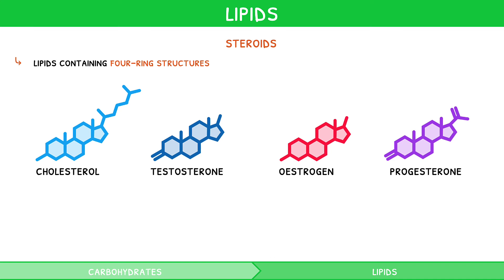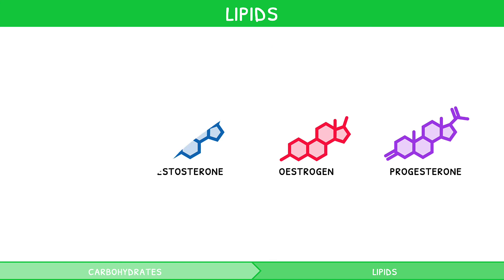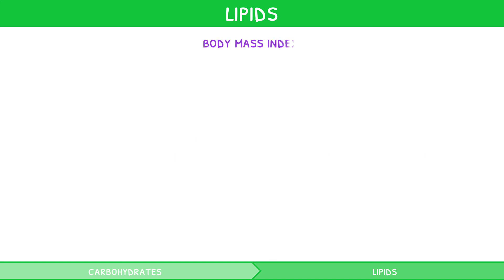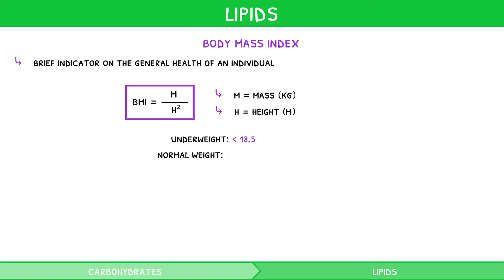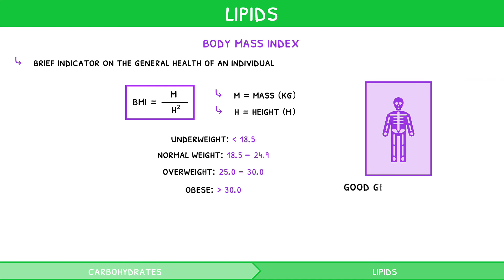Lipids and cholesterol are often discussed in relation to human health, with regards to the concept of body mass index. This measure is a brief indicator of the general health of an individual. It can be calculated using the formula BMI = m / h², where m equals mass in kilograms and h equals height in metres. The calculated value for BMI is then compared to reference ranges. BMI is not the best indicator of an individual's health, but it is a good general screen.